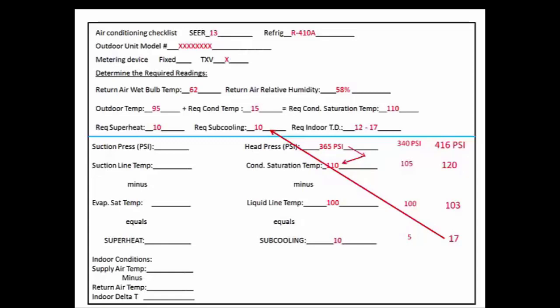By using our form here and looking at our subcooling, on a TXV system we can tell whether we have too much refrigerant in the system, not enough refrigerant, or just the right amount of refrigerant. If it's a fixed orifice metering device, then we're going to be looking at our superheat. But on a TXV unit, we're going to use subcooling.